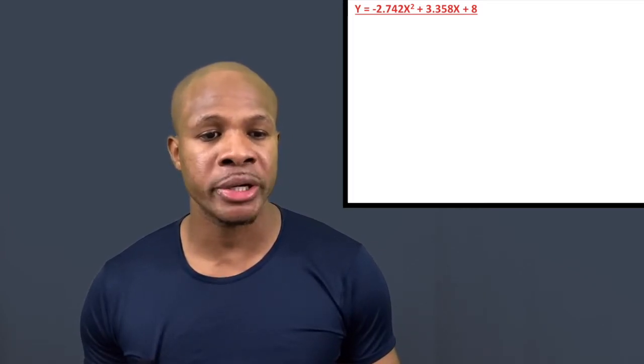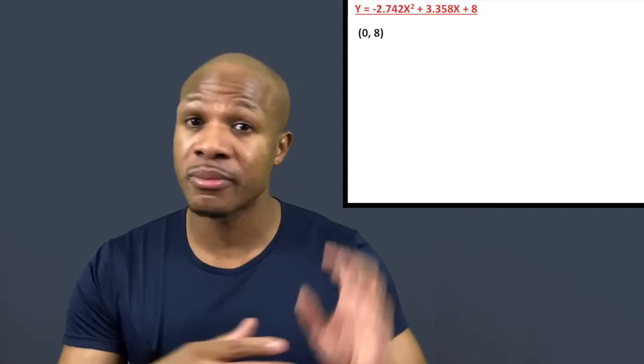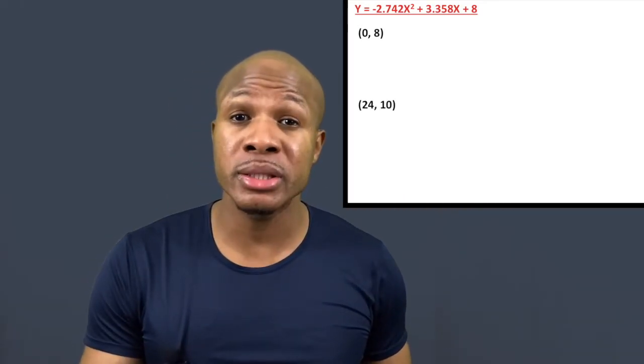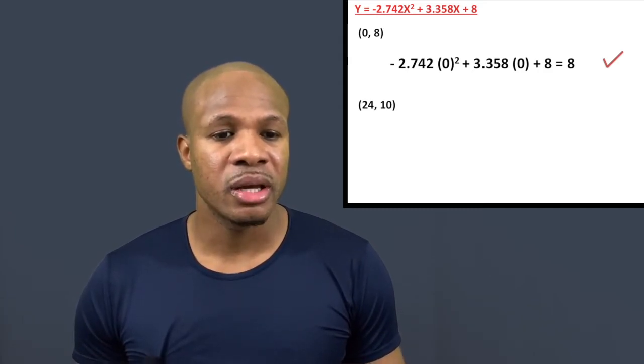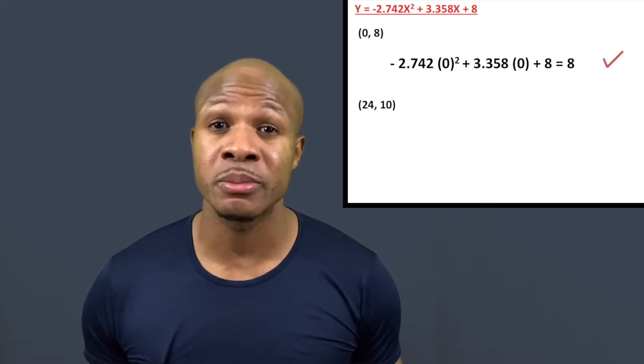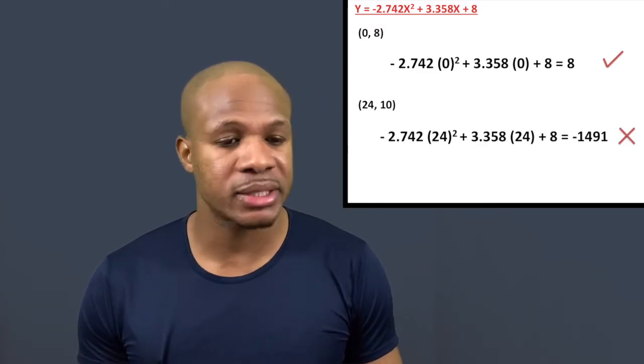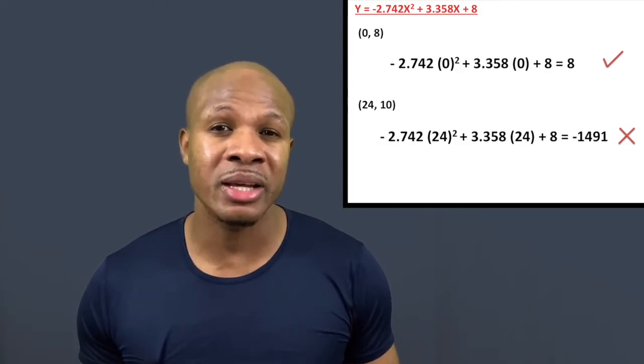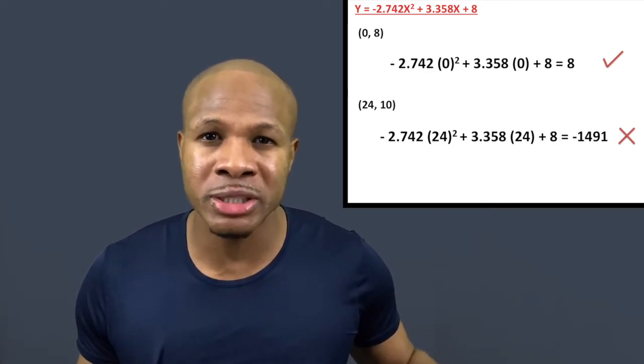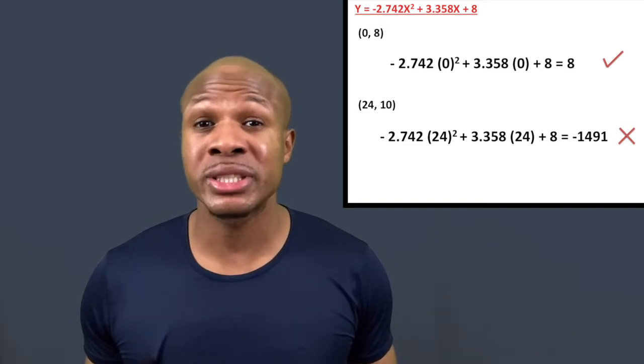Answer choice B is y = −2.742x² + 3.358x + 8. Plugging in x = 0 gives y = 8 — correct for the release point. But plugging in x = 24 gives y = −1491, meaning the ball would be 1491 feet underground. That makes no sense, so B is definitely wrong. Therefore C must be our answer.